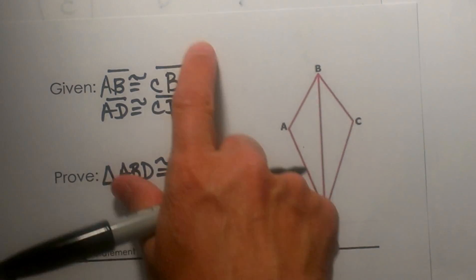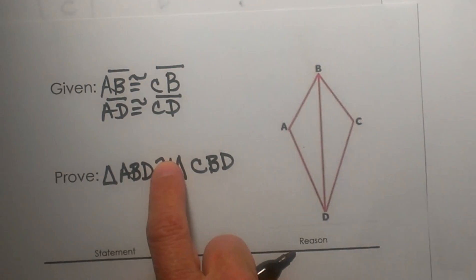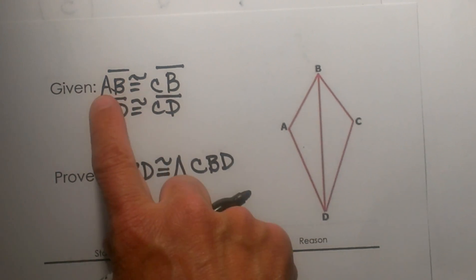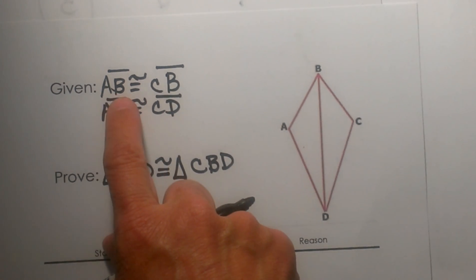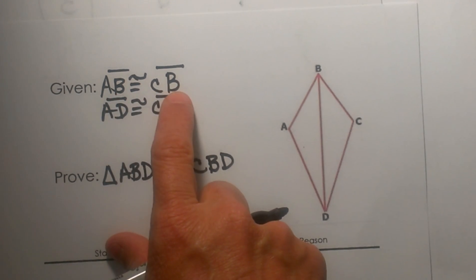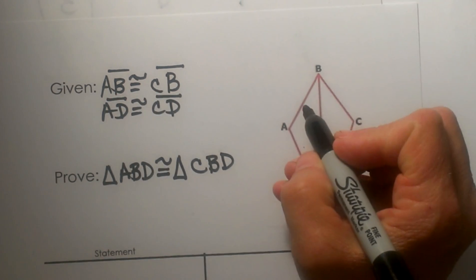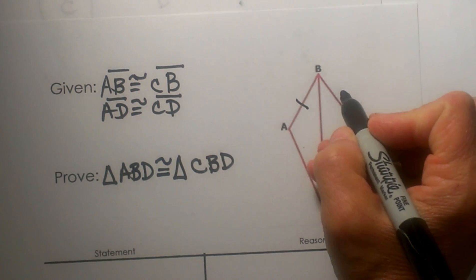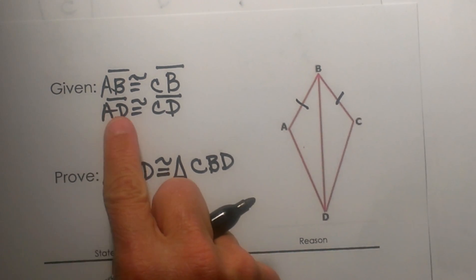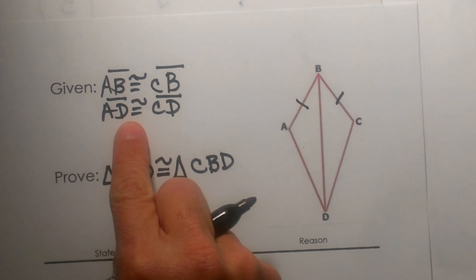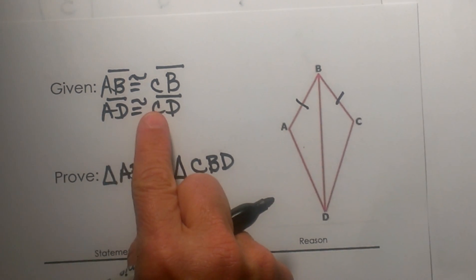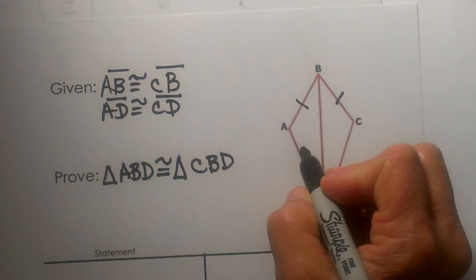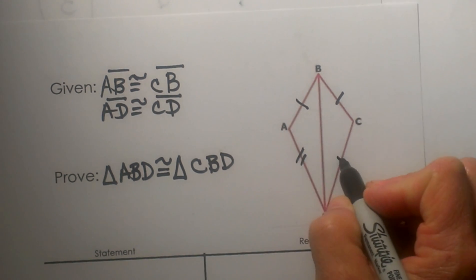Let's look at what information we are given and let's mark our diagram. We see that AB is congruent to CB, so that means this segment is congruent to this segment. And AD is congruent to CD, so AD and CD are congruent — let's mark that one.